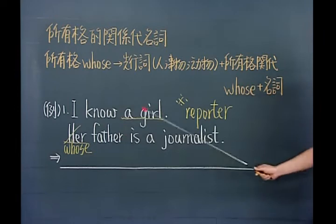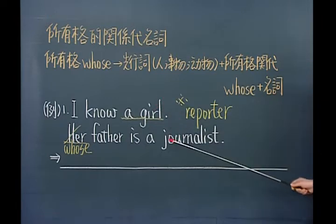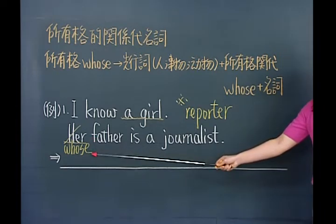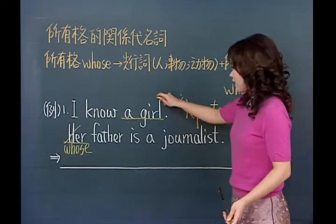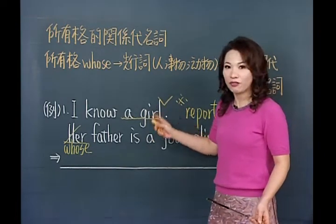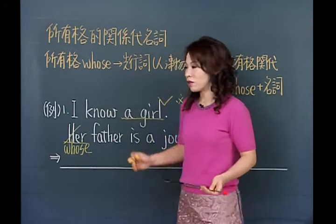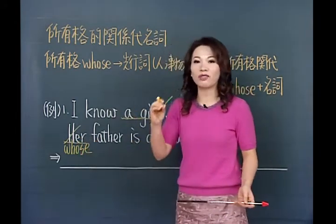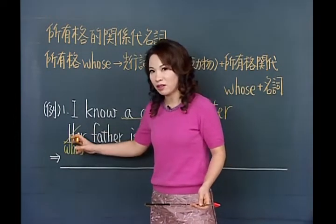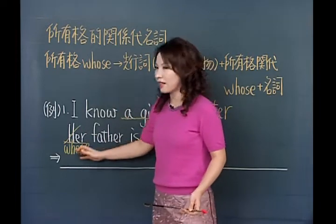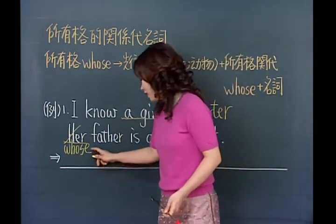合并成：I know a girl whose father is a journalist。有的同学说为什么不直接讲I know a girl, her father is a journalist？因为两句话要有连接词，whose有所有格的特性也有连接词的特性，可以把两句话连在一起。方法跟主格关带是一样的：找出重复的地方，因为重复才需要放代名词，这里是所有格，换成所有格关带whose。